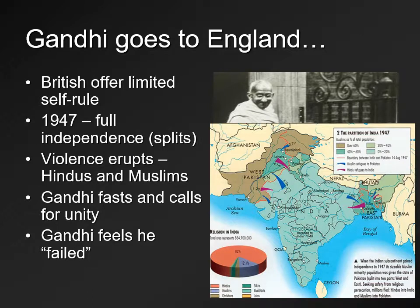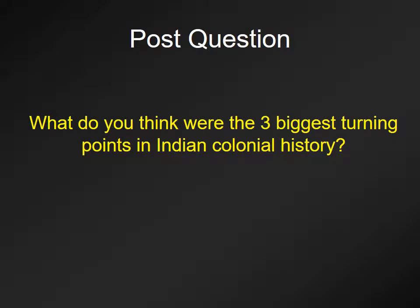It's sad because Gandhi felt he died a failure — he had hoped to have all of India united. India and Pakistan went their separate ways, and there are tensions to this day between them; they both have nuclear weapons. That, in a nutshell, is how the British came to control and then eventually quit India. Don't forget your post: what do you think were the three biggest turning points in Indian colonial history? Good luck.